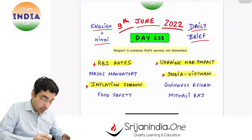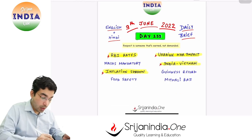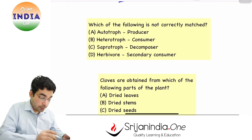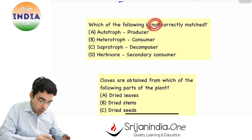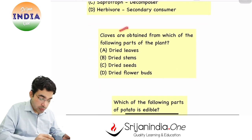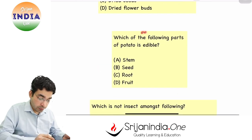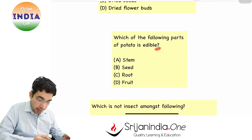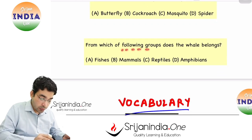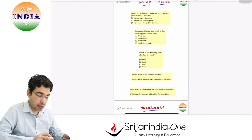Respect is earned, not demanded. Today is 9th of June 2022. Let us have a quick discussion of important topics. Quiz number 43 — Science ke sawal hain. Which of the following is not correctly matched: autotroph, heterotroph, saprotroph, and herbivore? Cloves are obtained from which part of the plant? Which part of potato is edible? Which is not an insect? From which group does the whale belong — fishes, mammal, reptile, or amphibian? These are the questions for today.